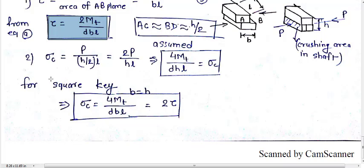For square key, height and width are equal, so b equals h. Putting b equals h in the crushing stress equation, we get 4Mt by DBL. Taking 2 outside, this becomes 2 times 2Mt by DBL, which is 2 times tau. So sigma c equals 2 tau. From this relation we can say that crushing stress is 2 times the shear stress for square key.